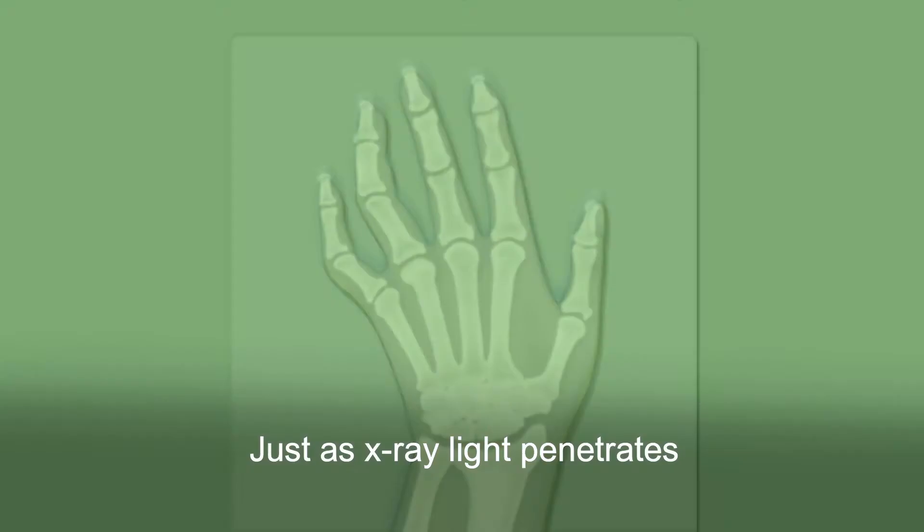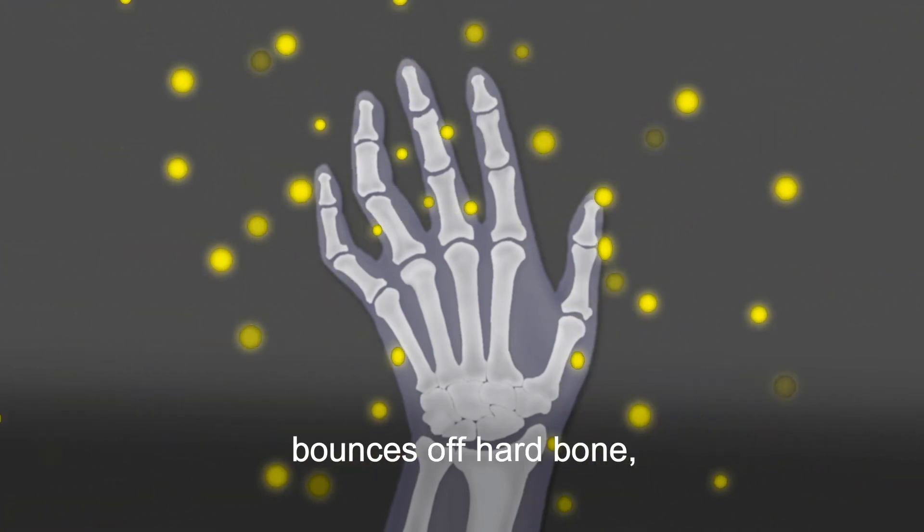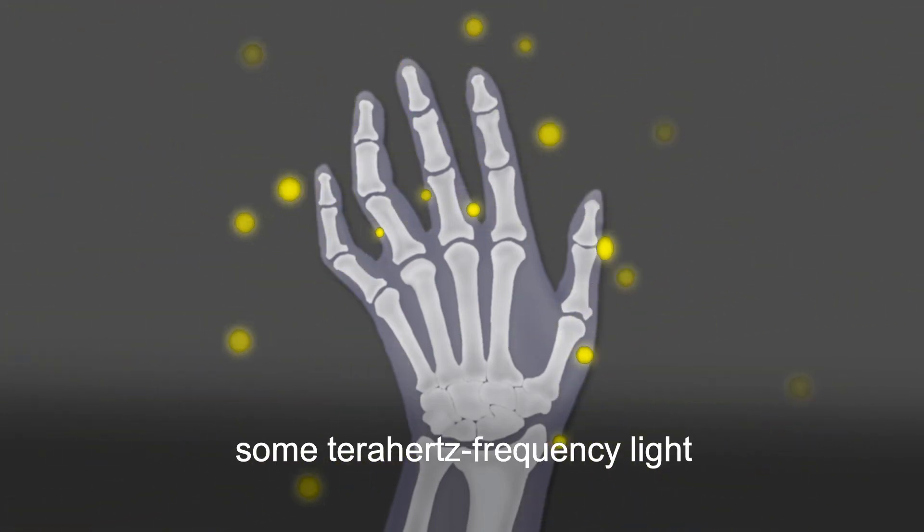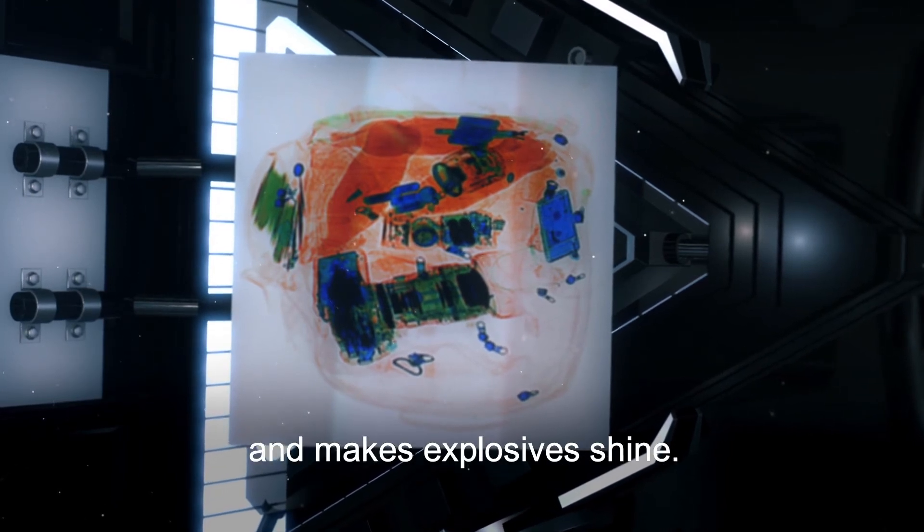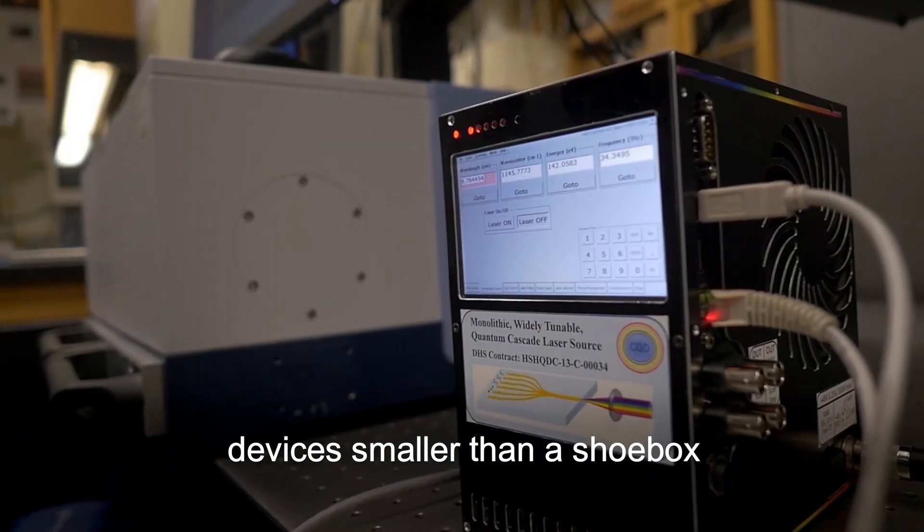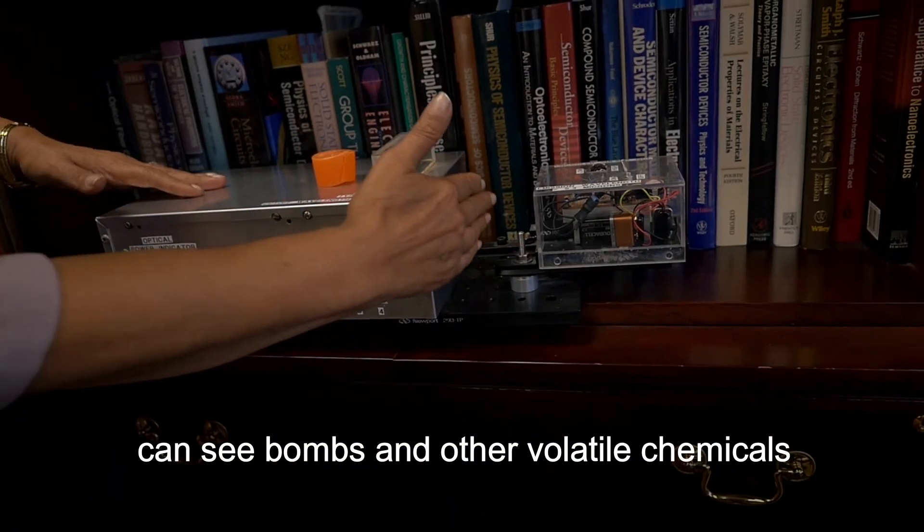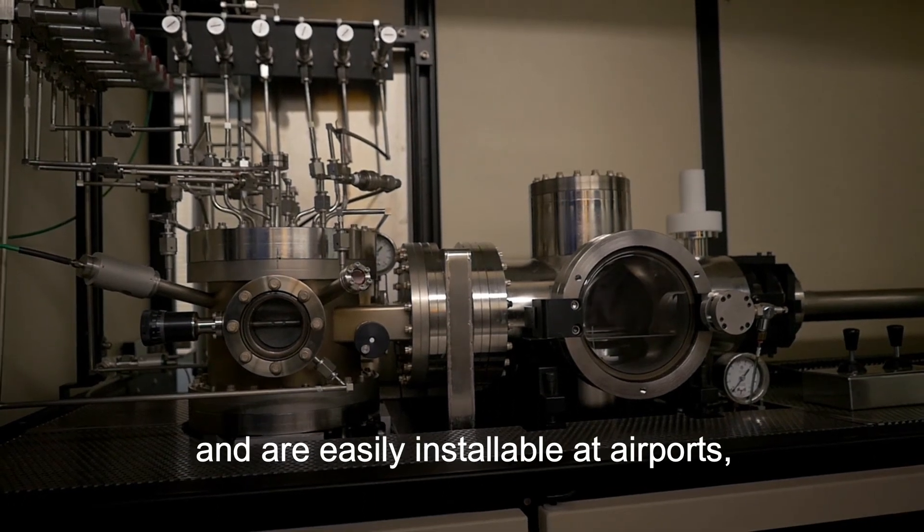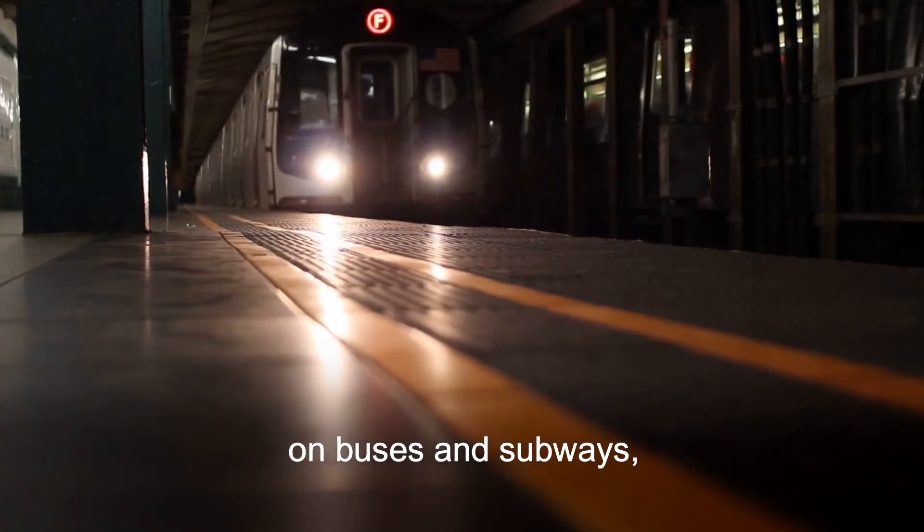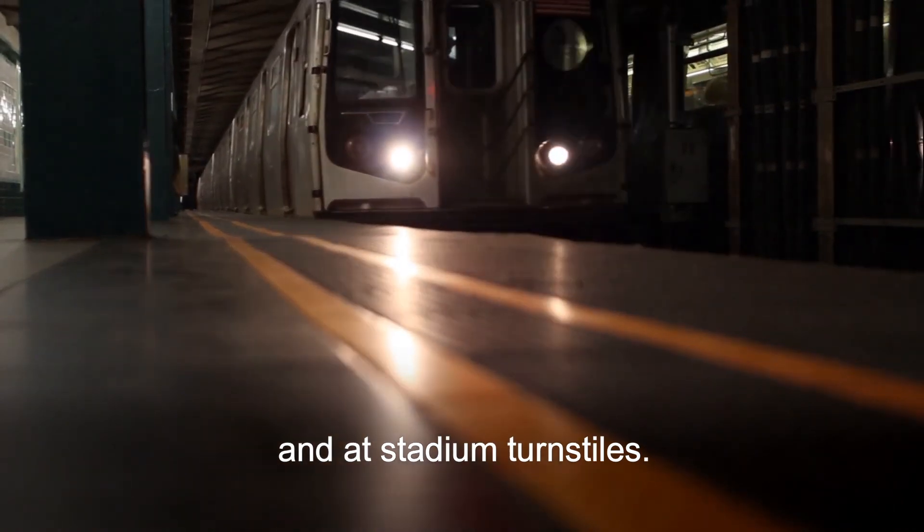Just as X-ray light penetrates most soft tissue and bounces off hard bone, some terahertz frequency light penetrates suitcases and makes explosives shine. Pioneered in Razeghi's lab, devices smaller than a shoebox can see bombs and other volatile chemicals in luggage and beneath clothes. These devices can be made cheaply and are easily installable at airports, on buses and subways, and at stadium turnstiles.